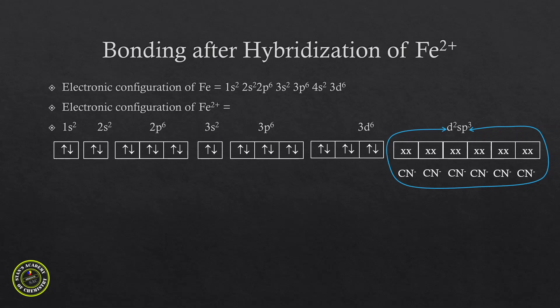The d²sp³ hybridization explains the formation of the octahedral complex. The d orbital taking part comes from the third energy level, while s and p belong to the fourth energy level, so we write it as d²sp³, indicating an inner d orbital. If instead the outer 4d orbital had been used, it would be written as sp³d², but both give octahedral geometry with bond angles of 90°.